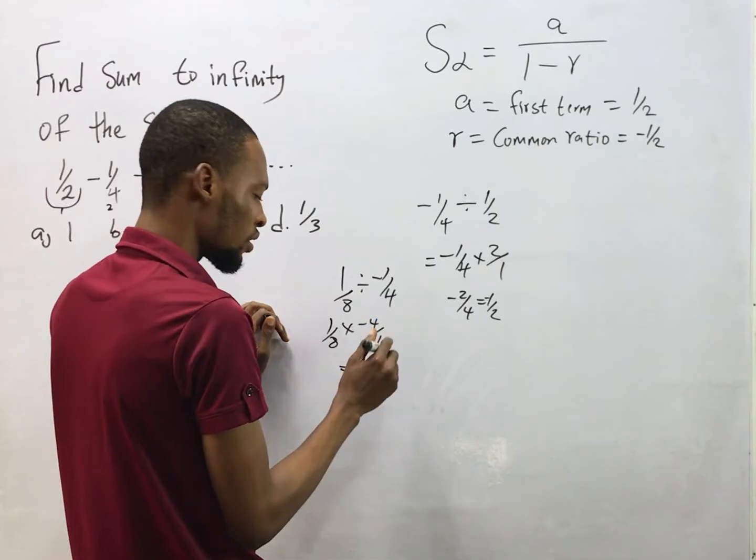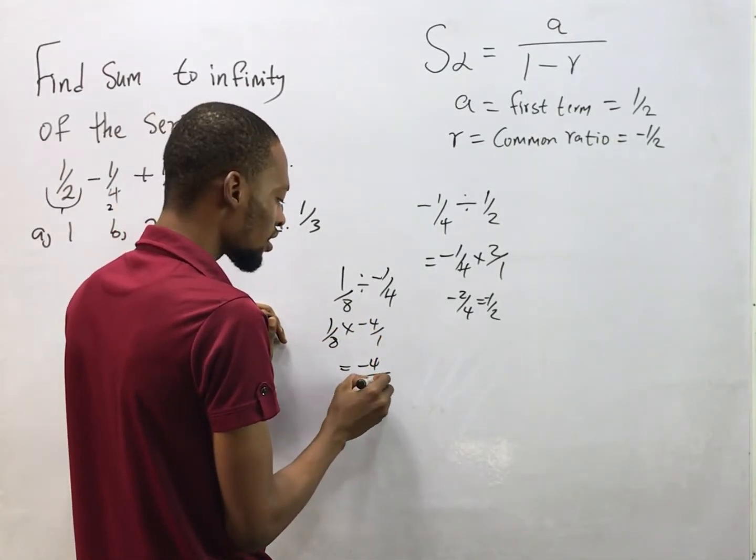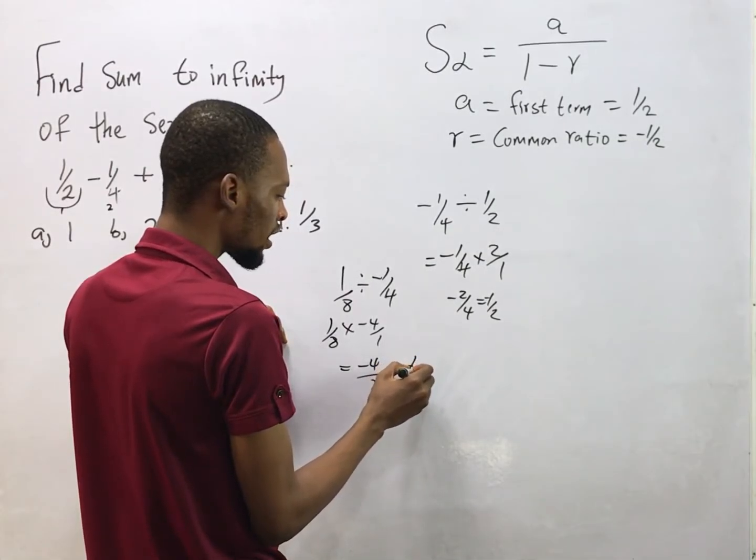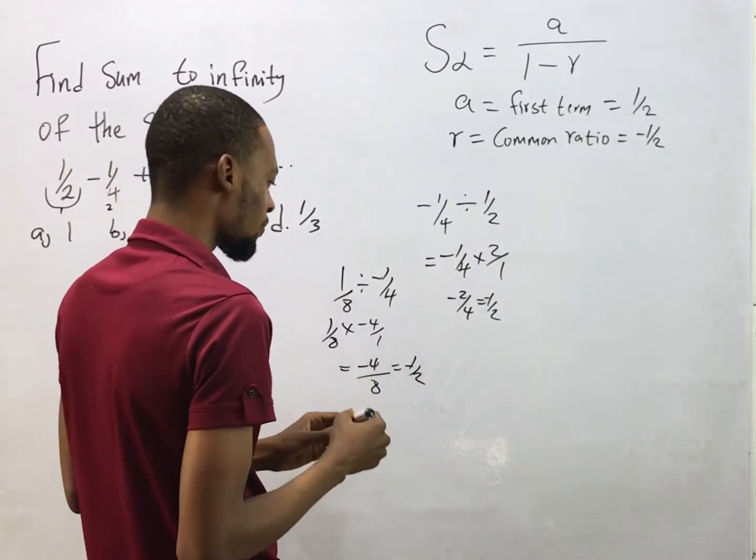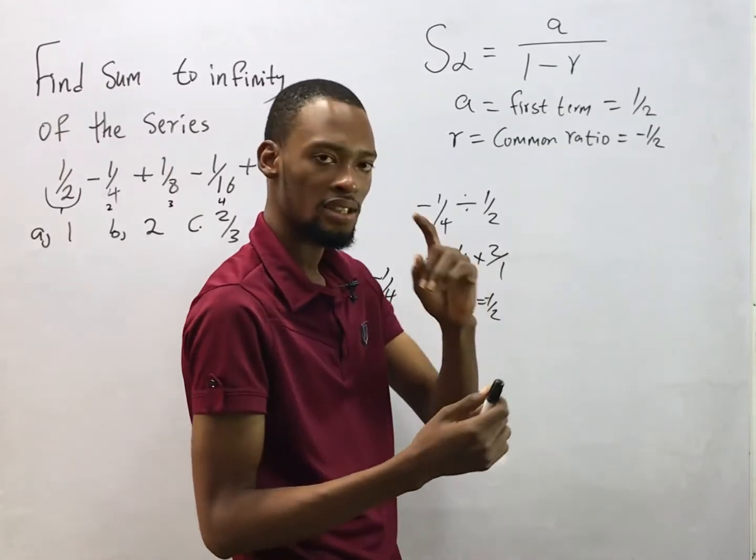1 times -4 is -4 and 8 times 1 is 8. This will simply give you -1/2 when you break it down. So in any way you go about it, common ratio remains the same.